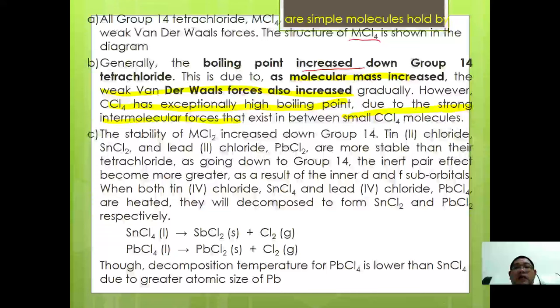Stability of MCl2 increases down Group 14. For tin and lead compounds, SnCl2 and PbCl2 are more stable in +2 oxidation state rather than +4 due to the inert pair effect that becomes greater as a result of inner d and f sub-orbitals. When heated, SnCl4 will dissociate to become SnCl2 plus Cl2. PbCl4 can also decompose to become PbCl2 plus Cl2 even at room temperature. This decomposition temperature of PbCl4 is lower because the atomic size of Pb is greater, increasing the bond length and decreasing bond strength.